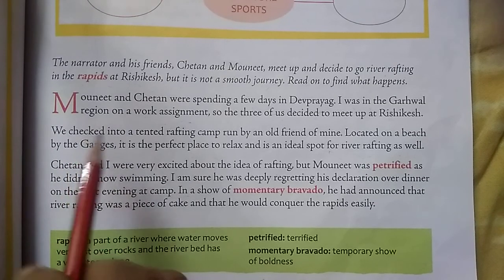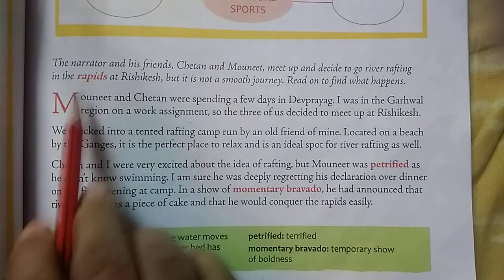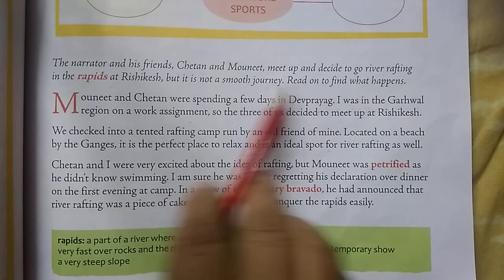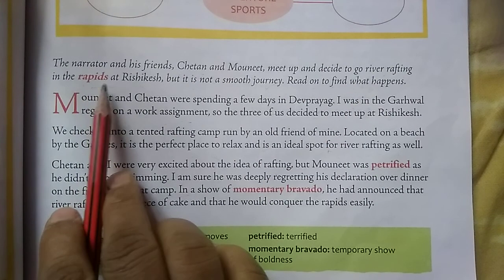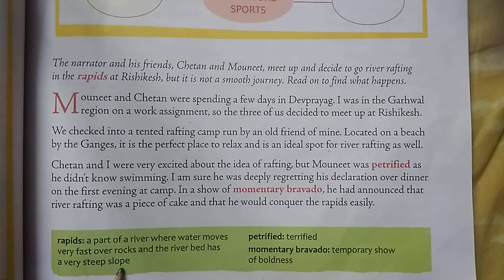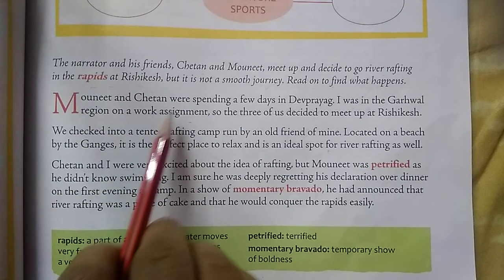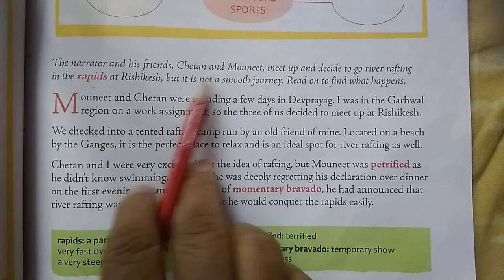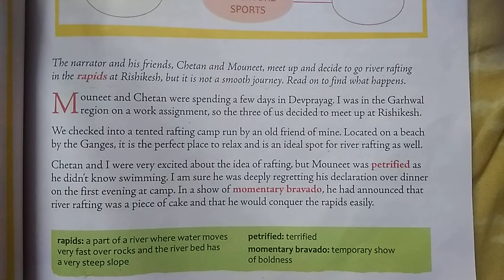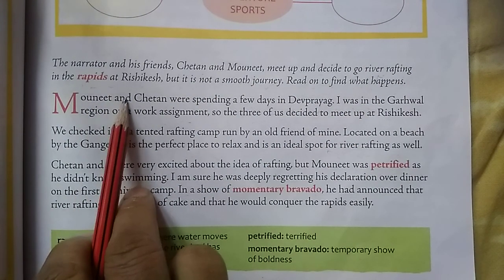The narrator and his friends Chetan and Maunit meet up and decide to go river rafting in the rapids at Rishikesh, but it is not a smooth journey. Rapids is a part of a river where water moves very fast over rocks and the riverbed has a very steep slope.